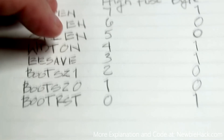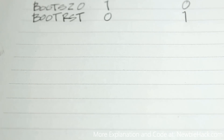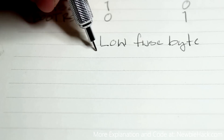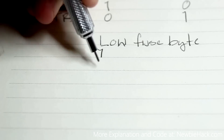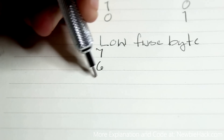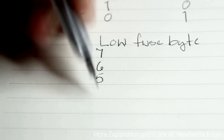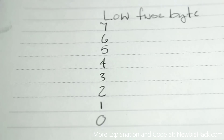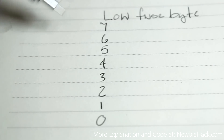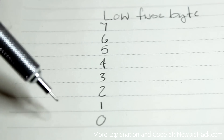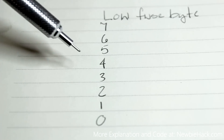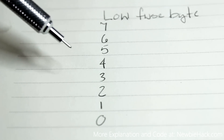Now let's talk about the low fuse byte. Like the high fuse byte, it's got an entire byte worth of information — 8 bits. The low fuse byte is generally about the clock source, the clock, and the startup of the microcontroller.